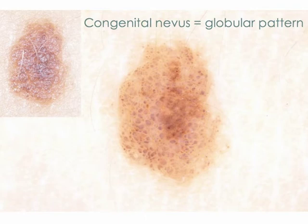The first category is represented by globular congenital NEVA. In the definition of globular congenital NEVA, we include benign melanocytic lesions that are present at birth, traditionally known as true congenital NEVA, or appear before puberty, traditionally known as early acquired NEVA.